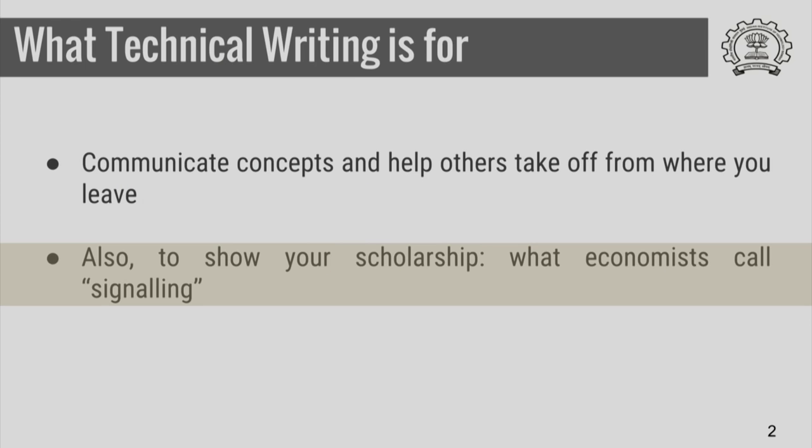This signalling in most technical documents is done through the references section. It is the footnotes and references that people read to identify if the writer knows, for example, what the important papers in that particular area are. You might submit a paper or a proposal, and if the reviewer says that these are the important papers in this area and the authors do not seem to be aware of them, then it means you will not get that degree, publication, or funding. So it is very important to show that you know the relevant work, and this is done using references.